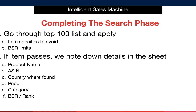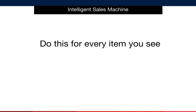In step 7, we'll note down items that have passed the search phase in the 4S product spreadsheet — recording the product name, ASIN, country where found, price, category, and BSR rank. We repeat this process for every item we find and continue until we've completed the building block exercise. Before you begin, I'm going to go through it in full so you can watch me do it step by step, and then you'll simply repeat what I did.